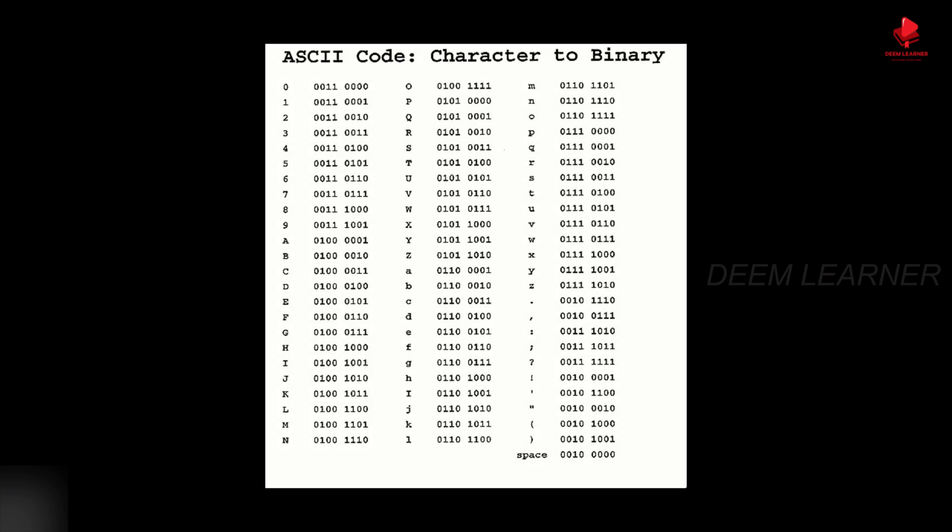Now the question is: how does your computer understand the code you just sent? As I said earlier, a computer has many, many circuits built inside it. When you send the electrical signals, they are directed to these circuits. The computer cannot understand us, but it can understand that such-and-such circuit has current passing through it. So when your keyboard sends the electrical signals, your computer thinks: circuit number one received electrical current — that means one; circuit number two did not receive any current — that means zero.